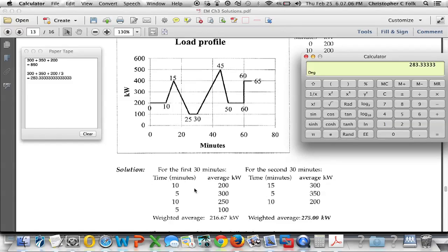The way we'll do that is, for example, for these first 30 minutes, 10 minutes is one-third of 30 minutes. So I have to multiply, I have to use one-third of the 200 kilowatts. The second averaged period was five minutes where we used 300. Five minutes is one-sixth of 30 minutes.